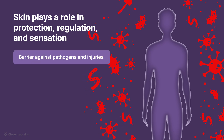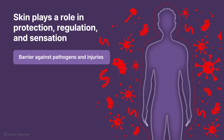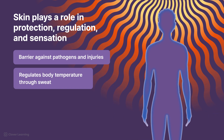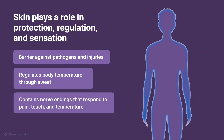The skin acts as a barrier against pathogens and injuries, protecting the body from infection. It also regulates body temperature through sweat. Finally, the skin contains nerve endings that respond to pain, touch, and temperature.